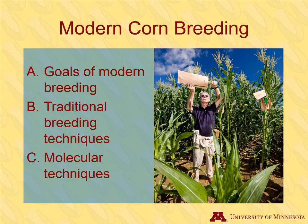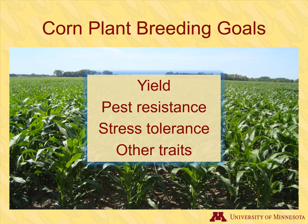When it comes to corn breeding in modern times, the objectives are often much more specific than they were in the past. It's not enough to have a goal to make corn better. Breeders improve corn by selecting for very specific traits. The main goals for modern corn breeding include increasing yield, increasing pest resistance whether insect or disease, and increasing tolerance to stresses such as drought, and sometimes other traits come into play.